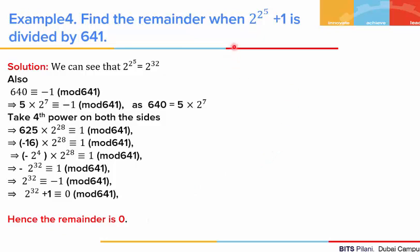In example 4, we are asked to find the remainder when 2 to the power 2 to the power 5, plus 1, is divided by 641. Now 2 to the power 2 to the power 5 is nothing but 2 to the power 32, since 2 to the power 5 is 32. We observe that 640 is congruent to minus 1 mod 641. And 640 is nothing but 5 times 2 to the power 7. So the left-hand side, 5 times 2 to the power 7, is congruent to minus 1 mod 641. Raising both sides to the power 4, we get 5 to the power 4, which is 625, times 2 to the power 28, congruent to 1 mod 641.